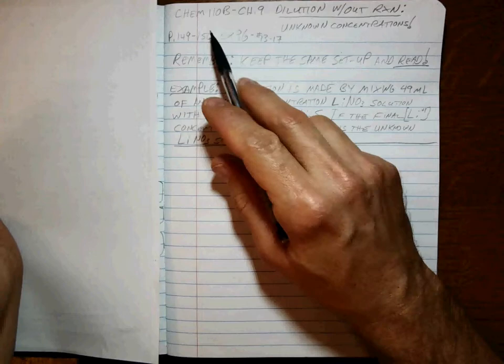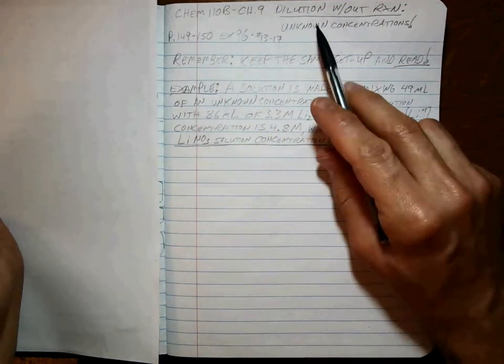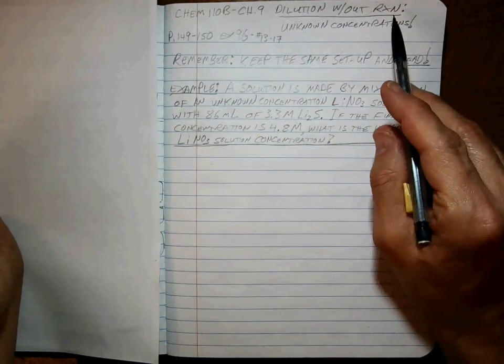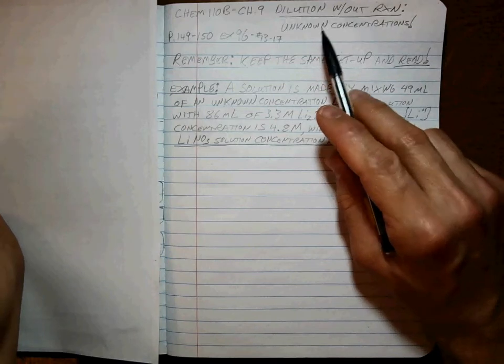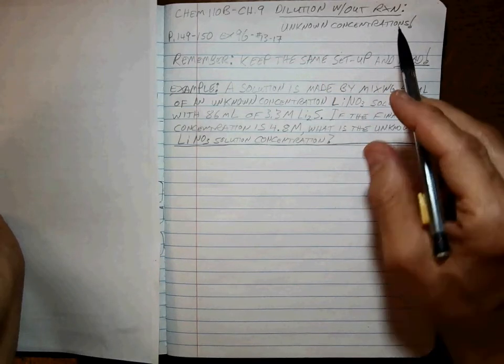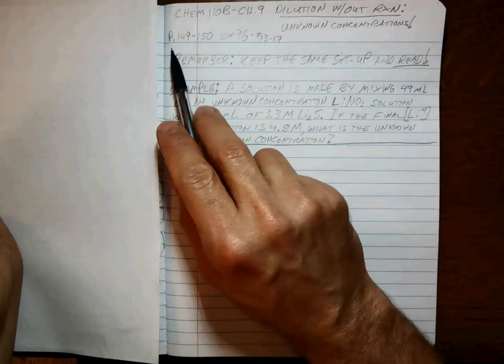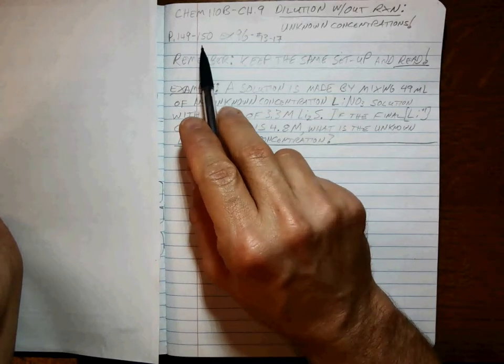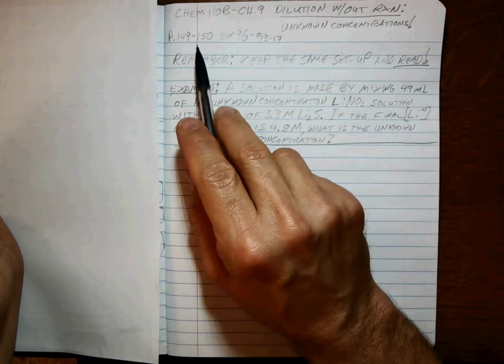Welcome back to Chem 110b, Chapter 9, Dilution Without Reaction. These are the ones that include unknown concentrations in the problem.